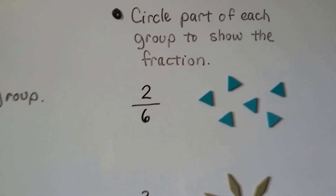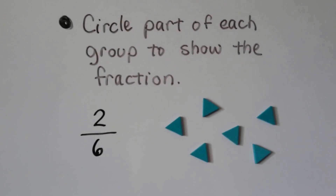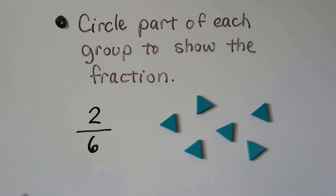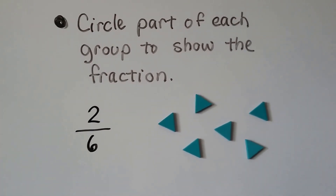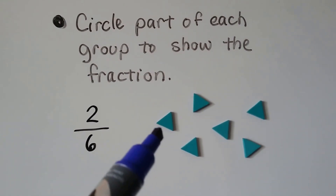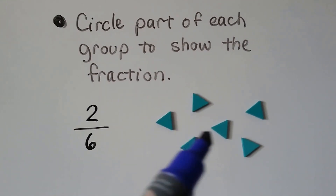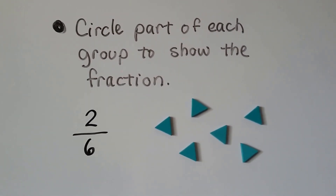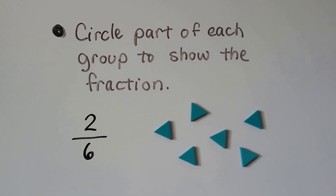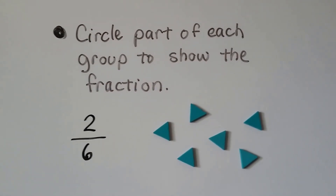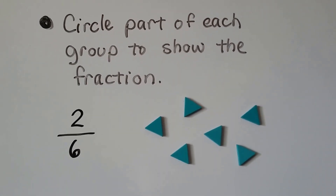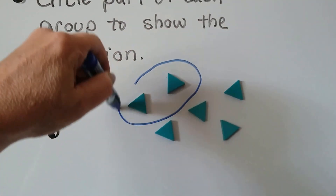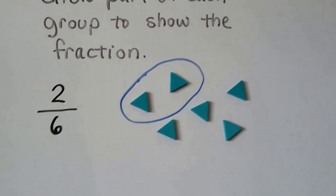We need to circle part of each group to show the fraction. We need to show two-sixths. We have one, two, three, four, five, six triangles, and two-sixths of them need to be circled. There's six in the group, and two of the six need to be circled — that would be two-sixths.